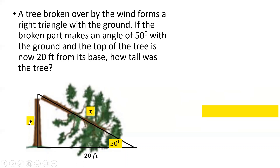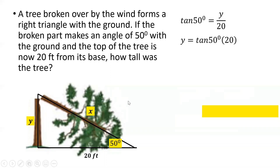To find y (the standing portion), y is opposite the 50-degree angle and the known value is the adjacent side of 20 feet. Using tangent: tangent 50° = y/20. Cross-multiplying: y = tangent 50° × 20 = 23.84 feet. So the standing height of the tree is 23.84 feet.